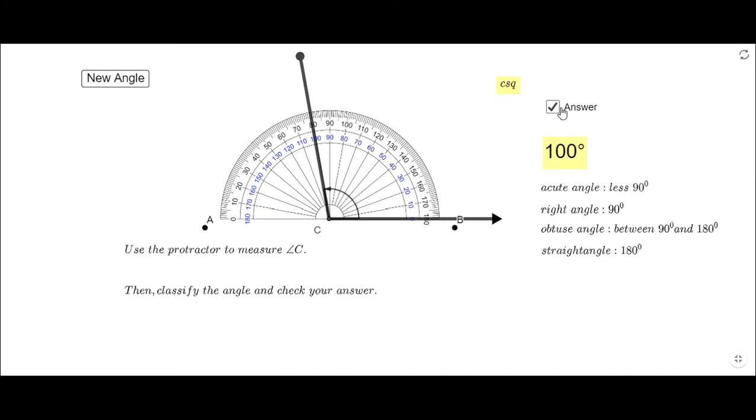I'm going to leave the protractor there and try to get more angles. Hopefully, I can get two more angles in this app: the right angle, which is 90 degrees, and a straight angle, which is 180.